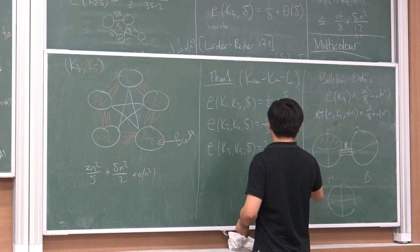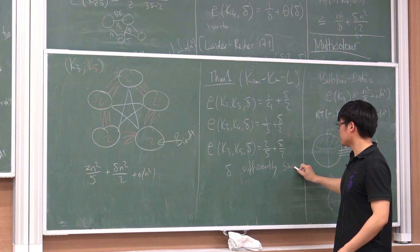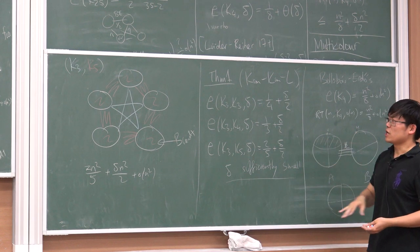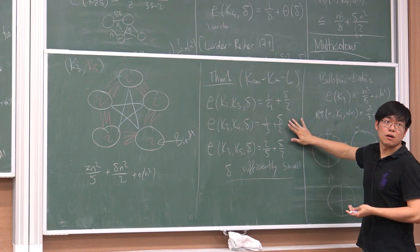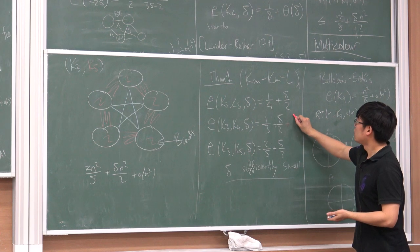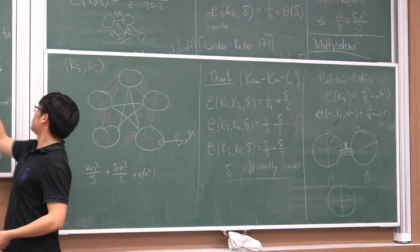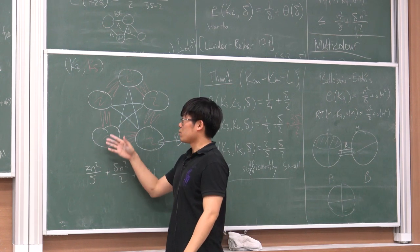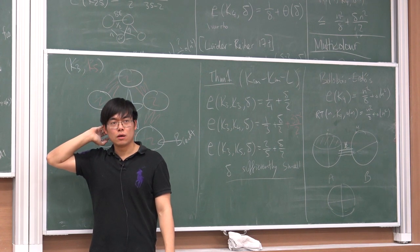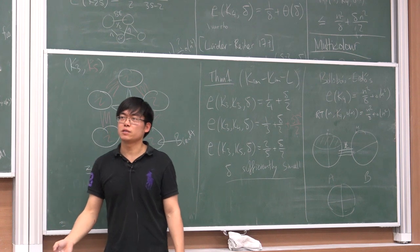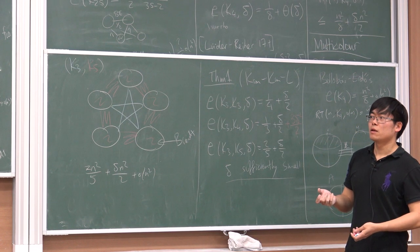Our first main result proves this conjecture - it can be viewed as a multicolor extension of Lüder and Reiher's result. We show that for K₃, K₃: ρ(K₃, K₃, δ) = 1/4 + δ/2. The constant C is 1/2. We also solve K₃, K₅. However, delta must be sufficiently small - this also appears in Erlich's work. For K₃, K₄ we can actually get a little more - an additional term in the lower bound.